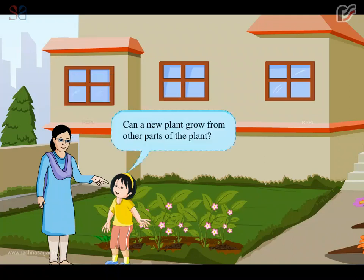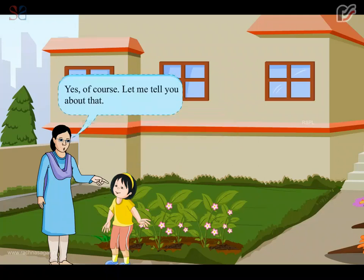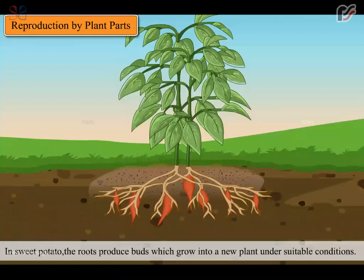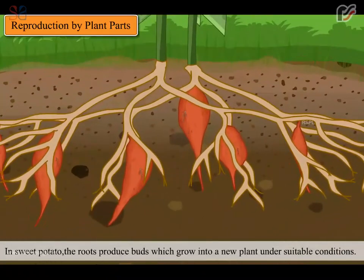Can a new plant grow from other parts of the plant? Yes, of course. Let me tell you about that. In some plants, reproduction takes place through parts such as root, stem or leaf. In sweet potato, the roots produce buds which grow into a new plant under suitable conditions.